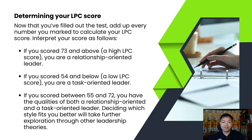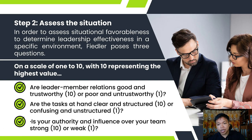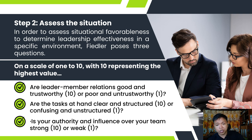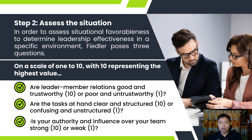If you scored between 55 and 72, you have qualities of both a relationship-oriented and a task-oriented leader. Deciding which style fits you better will take further exploration through other leadership theories. Your second step is to assess the situation. In order to assess situational favorableness and determine leadership effectiveness in a specific environment, Fiedler poses three questions: Are leader-member relations good and trustworthy, or poor and untrustworthy? Are the tasks at hand clear and structured, or confusing and unstructured? Is your authority and influence over your team strong or weak? Seek your team's insight by having group members anonymously answer these questions and calculate the average to best understand the situation's favorableness.